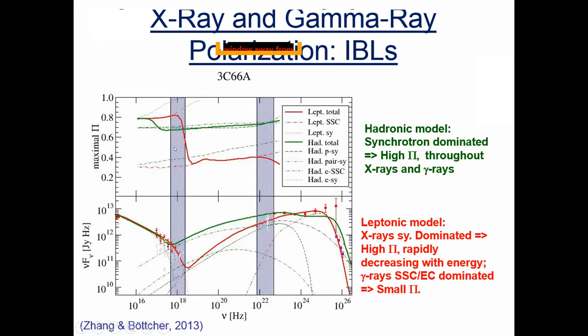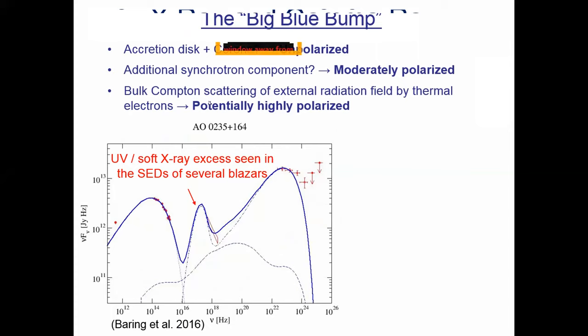For intermediate synchrotron-peaked blazars, X-rays are often dominated by electron synchrotron radiation in both leptonic and hadronic scenarios, so you expect a high degree of synchrotron polarization. The high-energy gamma-ray emission would often be dominated by SSC, giving relatively moderate polarization, whereas hadronic models again give a high degree of gamma-ray polarization.